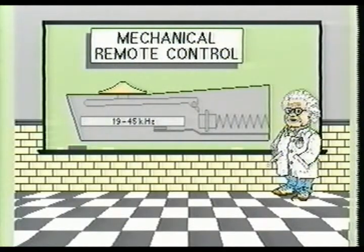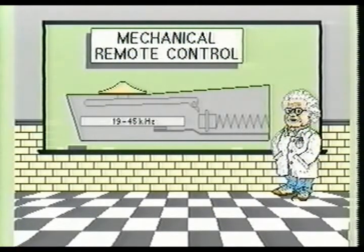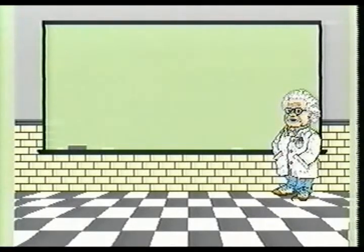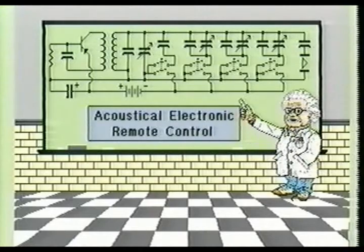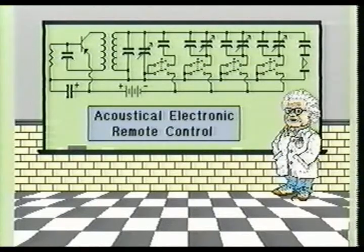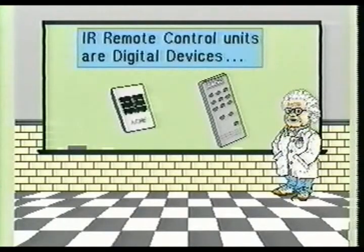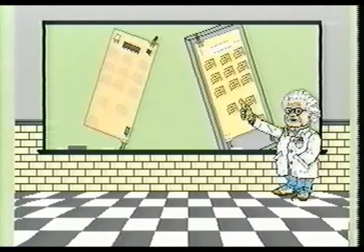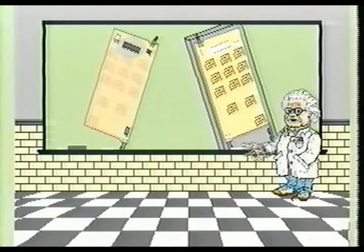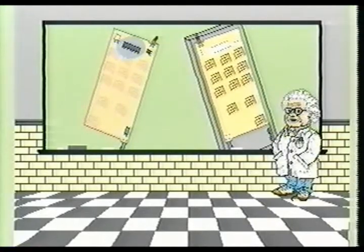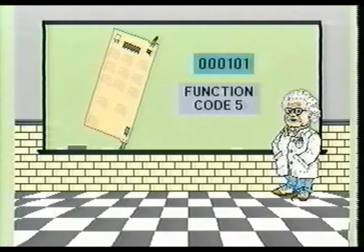In the older television remote control transmitters, aluminum rods would be tuned to generate a specific ultrasonic frequency ranging from 19 kHz to 45 kHz. The acoustical electronic remote control uses a Hartley oscillator or similar circuit with capacitance added to select an ultrasonic frequency which is transferred through a capacitive speaker or transducer. Infrared remote control units are essentially digital devices. Inside the IR control unit will be a small chip which controls the transmission of a coded pulse train of infrared light representing the selected function to the television receiver. This pulse train may differ from other models in the aspects of actual code used, including the bit word length and the timing duration of each binary logic condition.